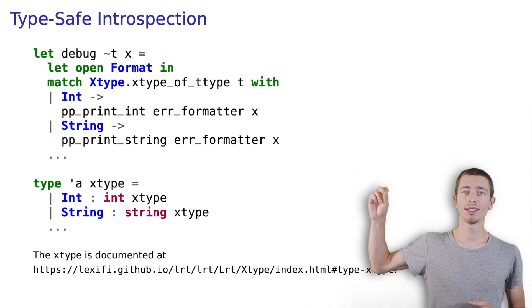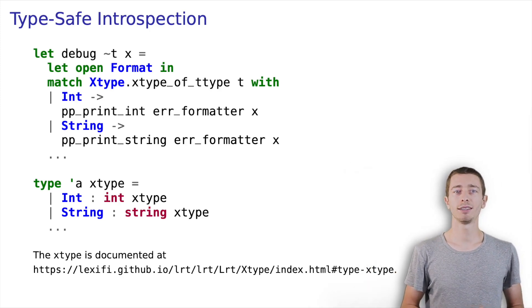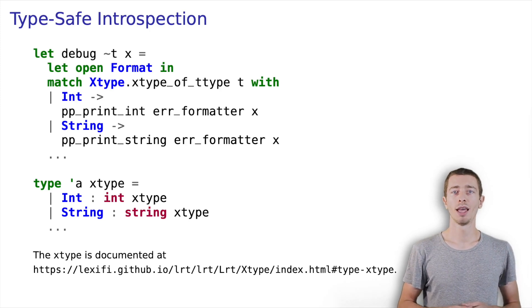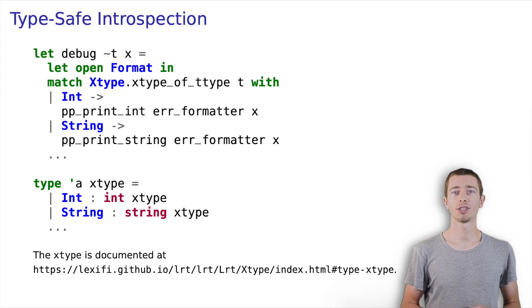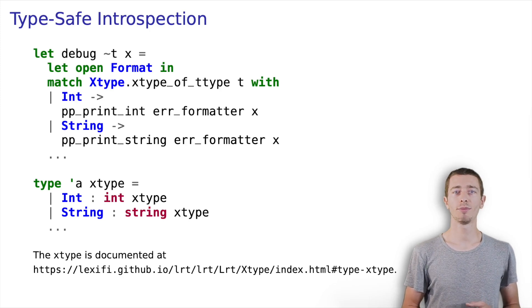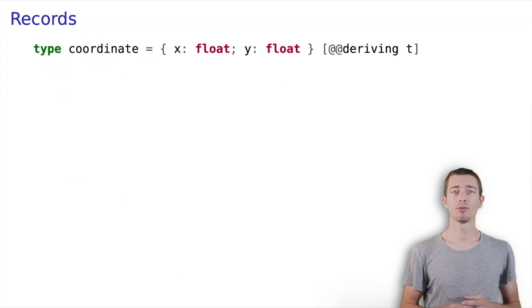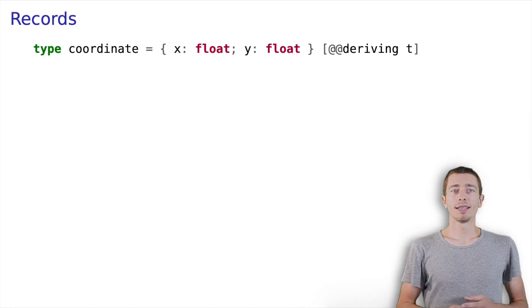Unfortunately, the xtype GADT definition is too long to fit the slides — I will post a link to its documentation in the chat. If you follow the link, you will see that we support safe introspection of the most common primitive types, tuples, sum types, and records. Let's have a look at this simple coordinate type. It has two fields, X and Y, of type float.